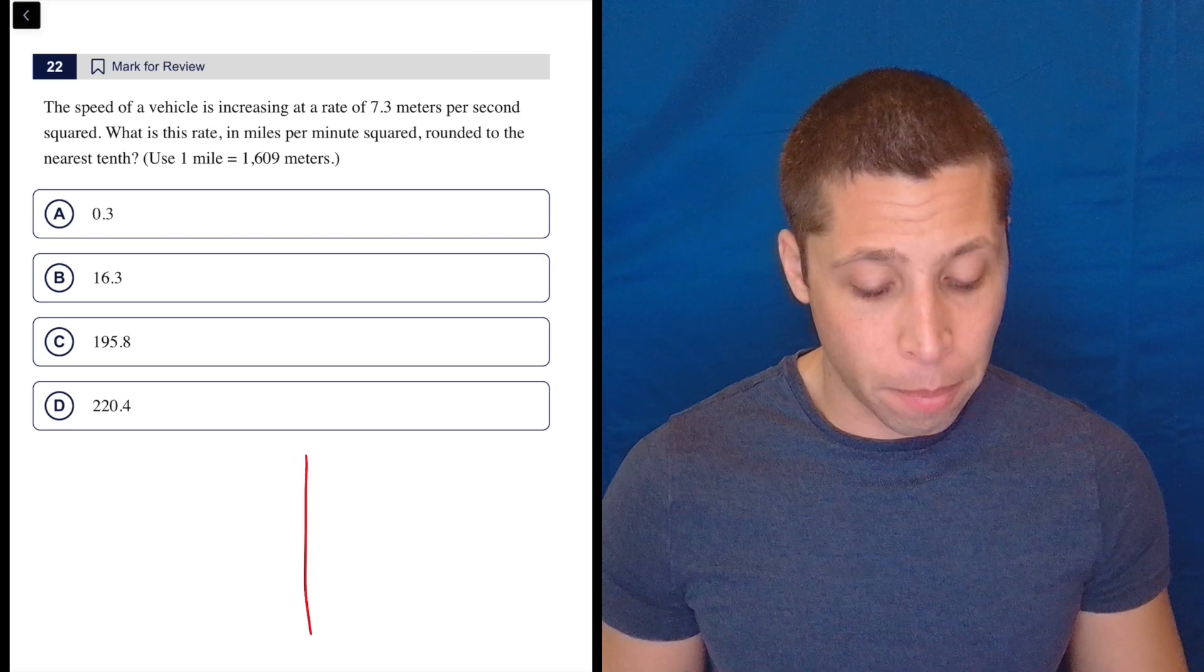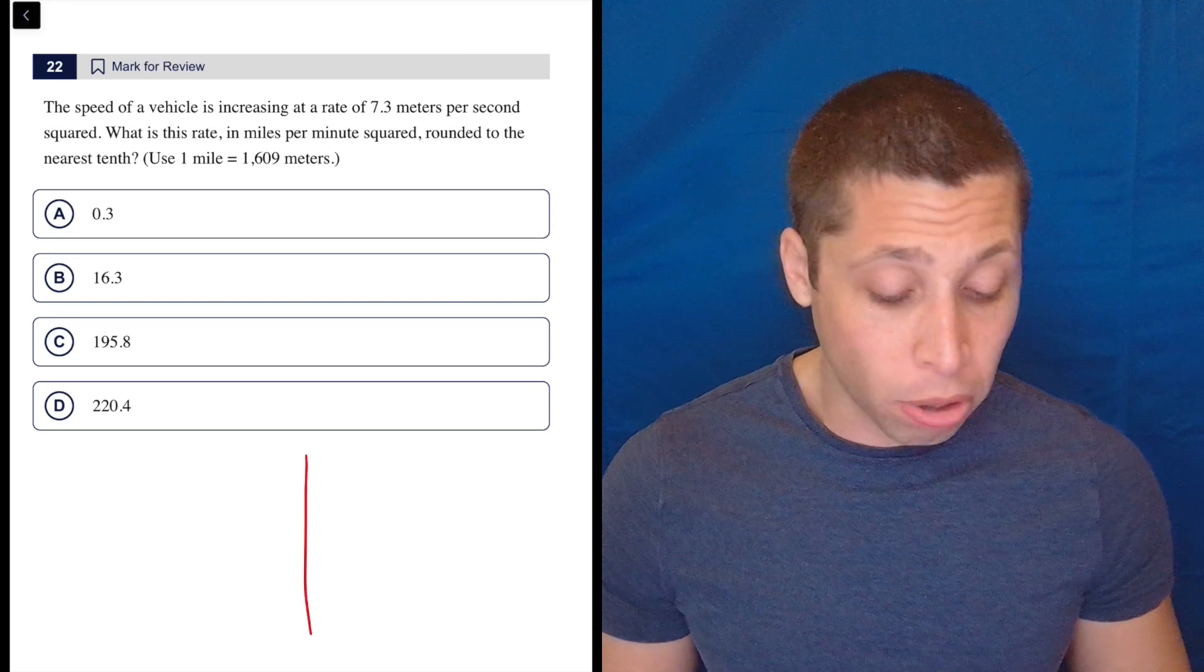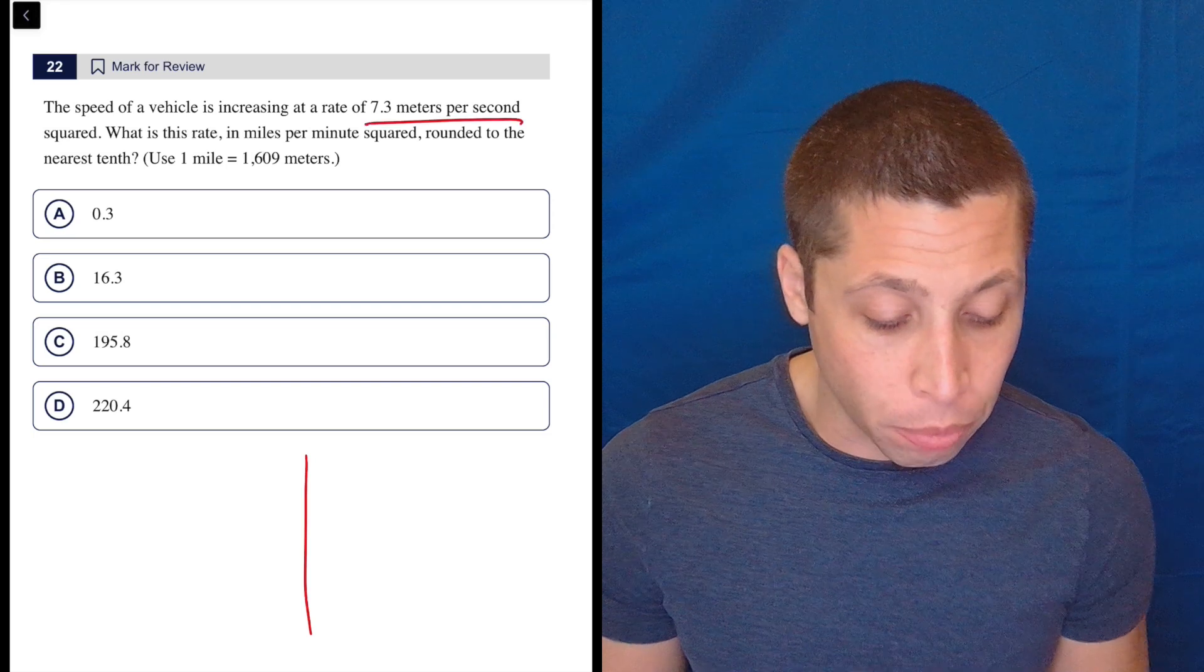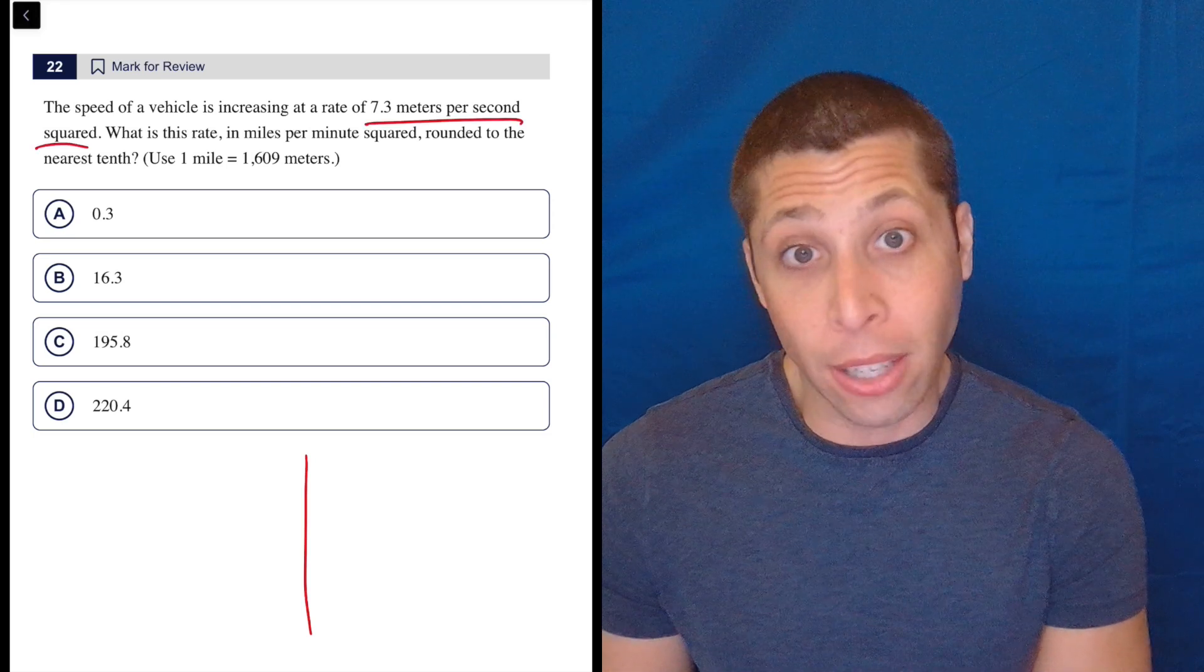There is a little bit of a twist here that a lot of people are going to fall for. It's a bit of a trap, but we can start anywhere we want. They give us the speed of a vehicle is increasing at a rate of 7.3 meters per second squared. So that's kind of our starting rate. It's got two units in it.